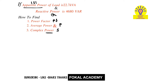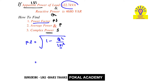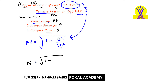To find the power factor, PF equals the square root of 1 minus Q squared divided by the magnitude of S squared, where the magnitude of S is the apparent power. Substituting the values — Q is 4680 VAR and apparent power is 22.7 kilo volt-ampere — and simplifying, we get a power factor equal to 0.97852.